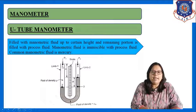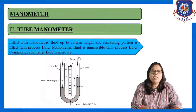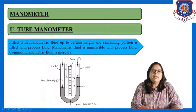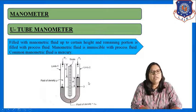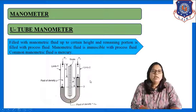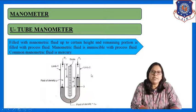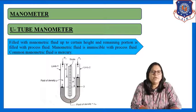The two ends of this U-tube are connected in the process between which we have to measure the pressure difference. In the middle of this U-tube, we have installed a scale to measure the height difference between the manometric fluid in the two limbs of the manometer. The U-tube manometer is filled with the manometric fluid up to a certain height, and the remaining portion is filled with process fluid.